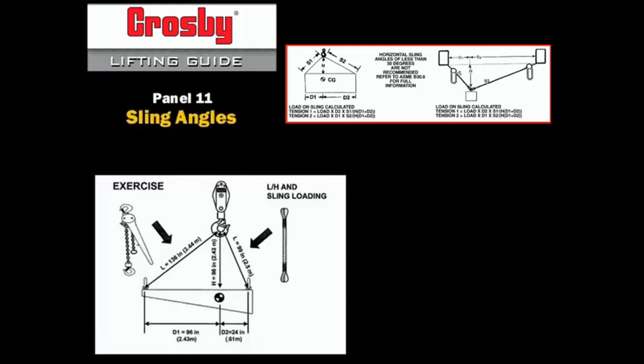In this example, we have a 10,000 pound load rigged with a synthetic sling on the right and a chain fall on the left. The center of gravity is 96 inches from the chain fall on the left and 24 inches from the sling on the right.